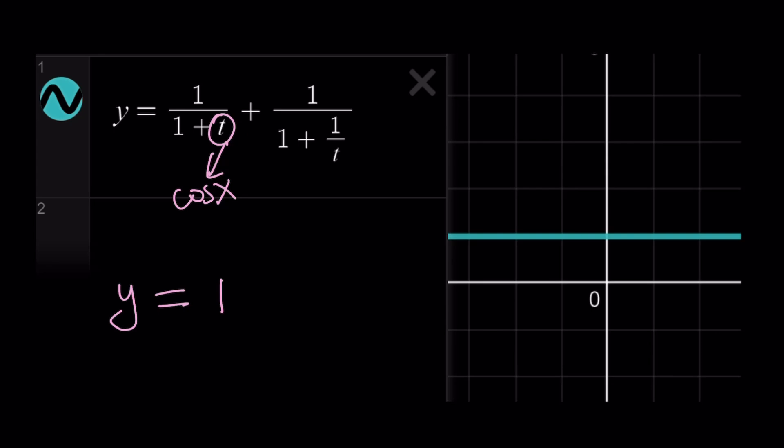Except for t equals negative 1 and t equals 0. Make sense? Except those, of course, Desmos doesn't exclude those. Too bad. But that's what it is. So this kind of shows you that this is going to be 1 as well, but you can also algebraically prove that by multiplying by t again, or making a common denominator, you're going to get 1 plus t over 1 plus t, which is equal to 1. And this verifies one more time.